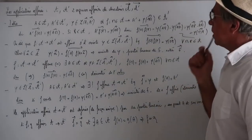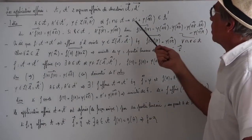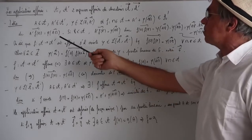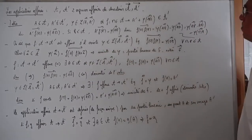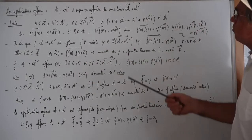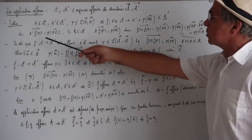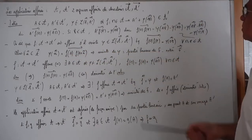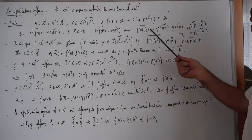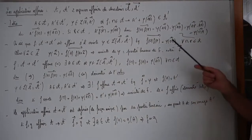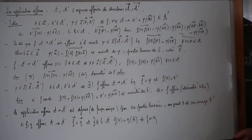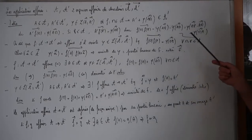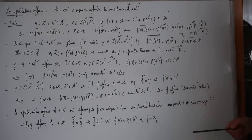On a A'F(M) égal à Φ(AM). Si P est un autre point, j'ai de même A'F(P) égal à Φ(AP), et donc en appliquant la relation de Chasles, j'ai le vecteur F(M)F(P) égal à Φ(AP) moins Φ(AM). Comme Φ est linéaire, ça fait Φ(AP - AM), et donc ça fait Φ(MP).